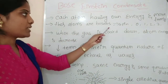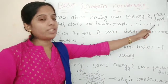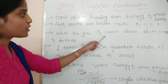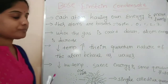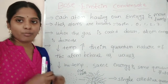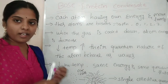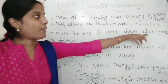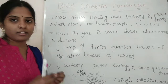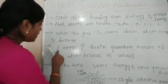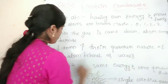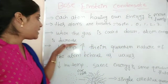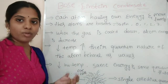These atoms are bosons, which have integer spin values: 0, 1, 2, 3. When the gas is cooled down, the atom's energy decreases. Gas particles move freely and collide; their speed goes down. If you bring the temperature down, the energy and speed decrease. Decreasing the temperature increases the quantum nature of the atom, and it begins to behave as a wave.